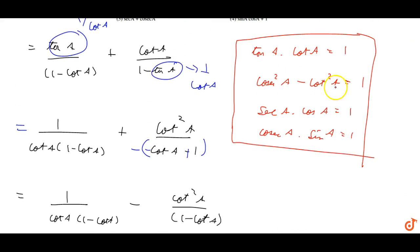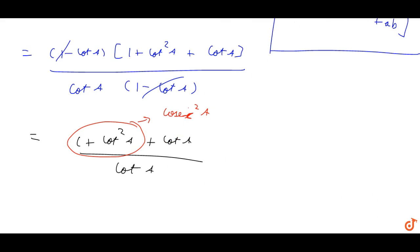Now, cosec A equals cot square A plus 1. So cot square A plus cot A, we can factor out cot A. This becomes cosec square A plus cot A upon cot A.